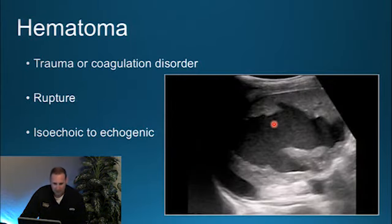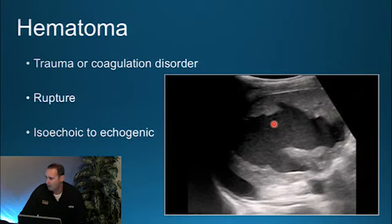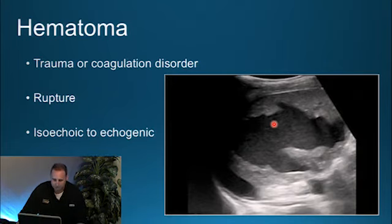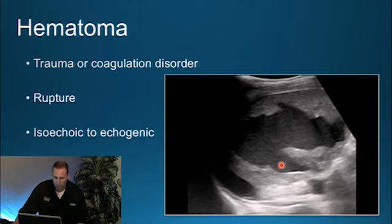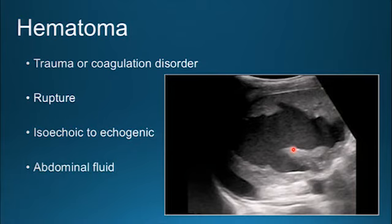Hematoma is caused by blunt trauma or a coagulation disorder. You have a rupture within the spleen, and depending on the state — whether acute or chronic — under ultrasound it can appear anywhere from isoechoic to echogenic. Large amounts of trauma can also displace abdominal fluid within the peritoneal cavity.